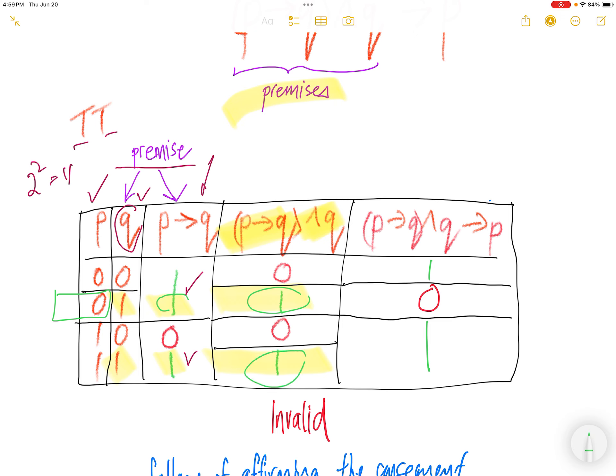The premises are true and then the conclusion is true for this case, for this row. For this row, it's okay.